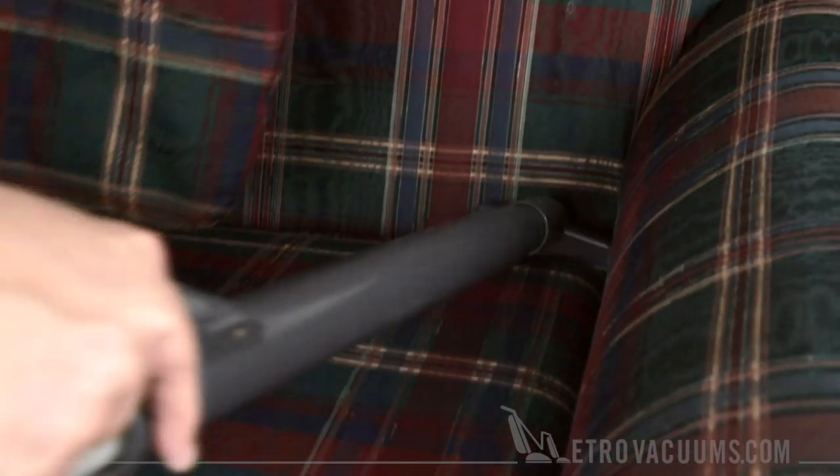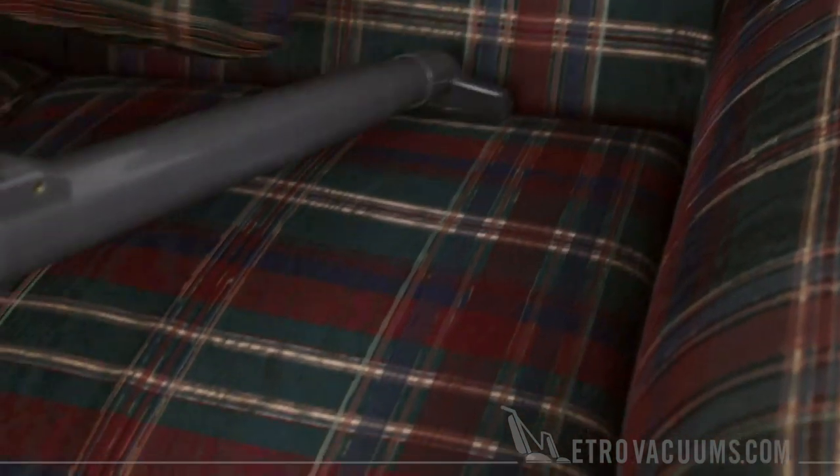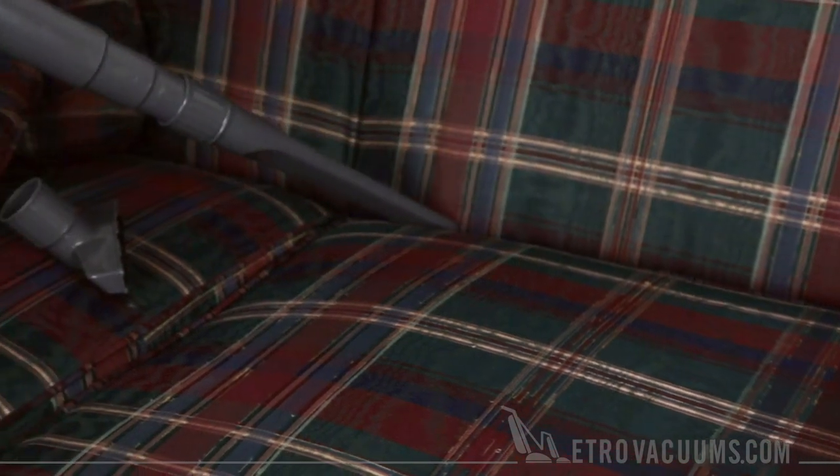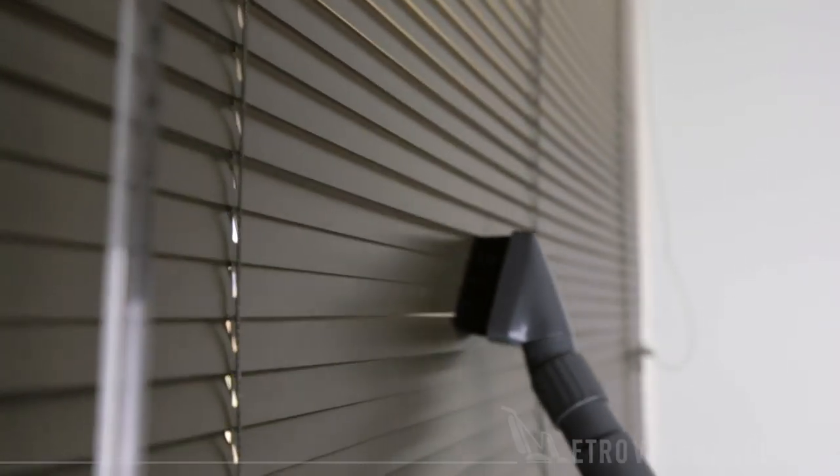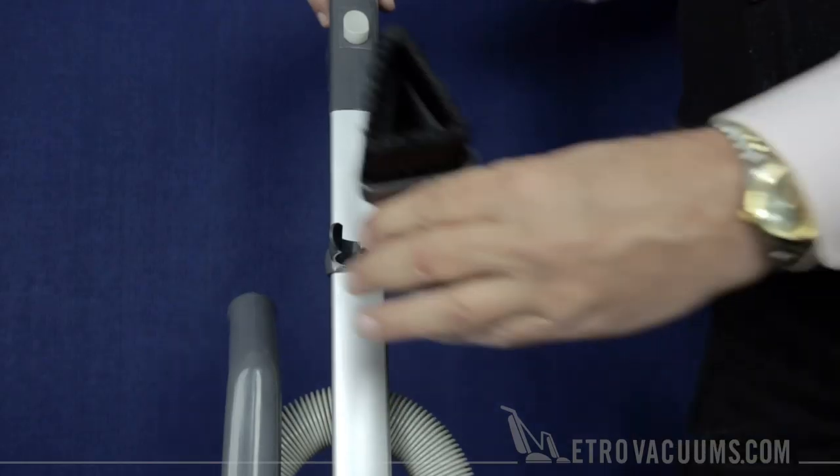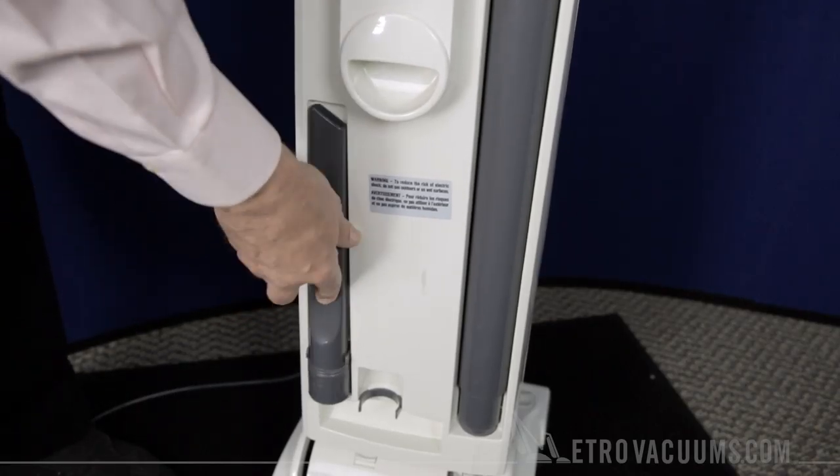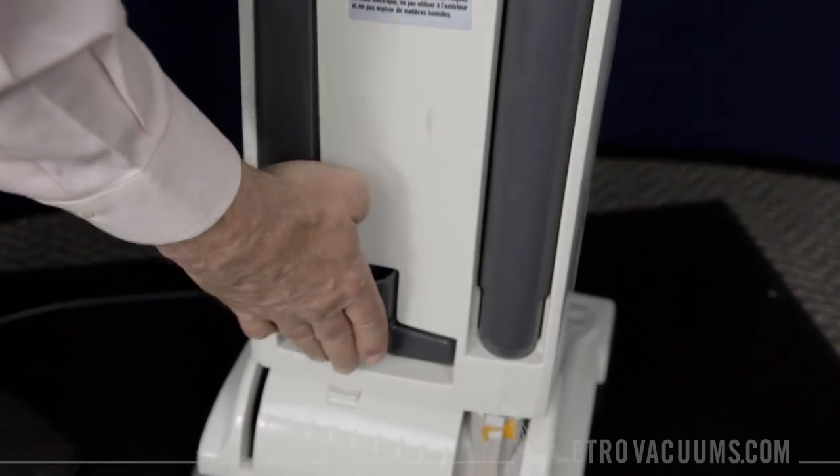The instant-use wand and suction hose along with the accessories include the upholstery tool, the crevice nozzle for more direct cleaning, and the dust brush for more delicate use. It takes care of everything that's not on the floor and stores easily right on the body of the SIBO X4.